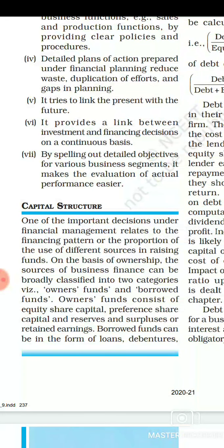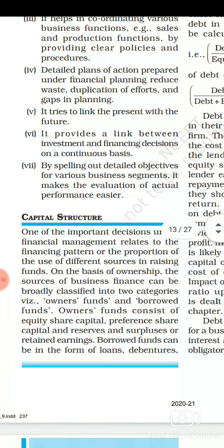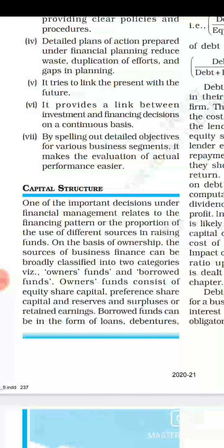Next, detailed plans of action are prepared under financial planning. The main reason for financial planning is that whenever finance is required by a business organization in the future, it will be available at the right time in the right quantity — meaning there will be no duplication, no wastage of funds, and the gap in managing funds will also be removed. Financial planning also tries to link the present with the future — it basically fills the gap between present and future, the same way planning does in general.